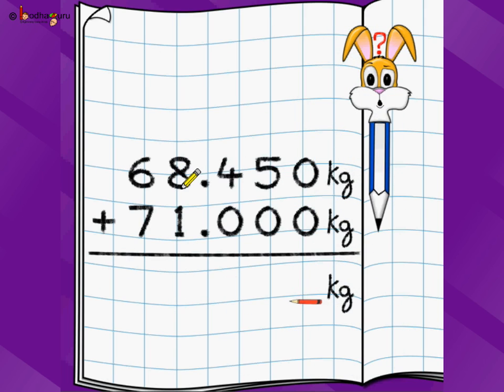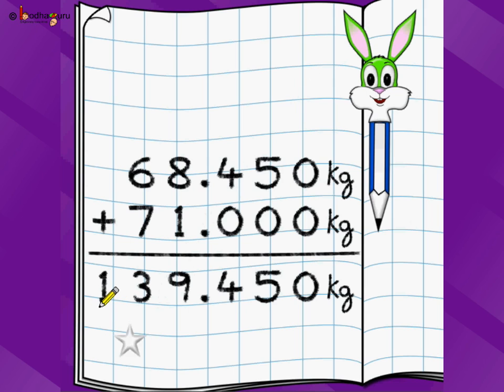Let's take another problem. Let's say we have 68.450 kg of wheat with us from the previous harvest and we got 71.000 kg from this harvest. How much total wheat we have? We write just like this and start adding from the rightmost digit from the one's position after the decimal point. Don't start the addition from position before decimal point. We start the addition from the rightmost position from the one's position after the decimal point. 0 plus 0 is 0, 5 plus 0 is 5, 4 plus 0 is 4, and then we go beyond the decimal point. Beyond the decimal point 8 plus 1 is 9, 6 plus 7 is 13. We have 139.450 kgs of wheat with us.